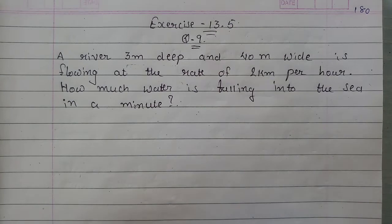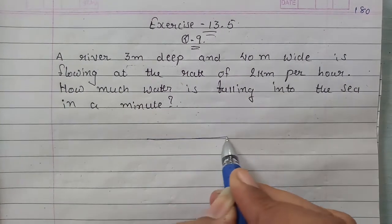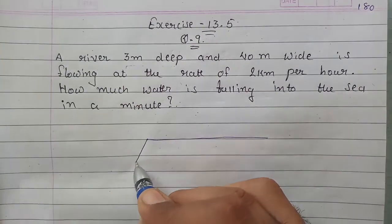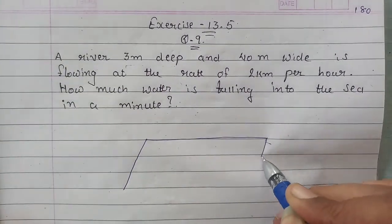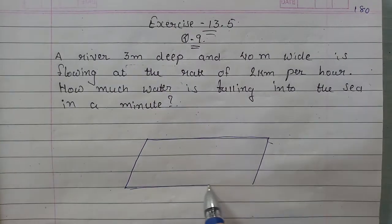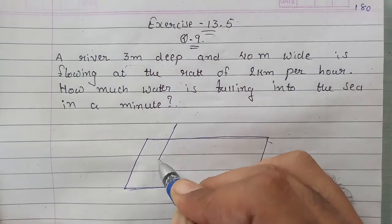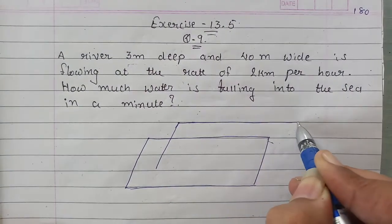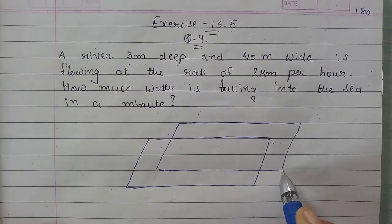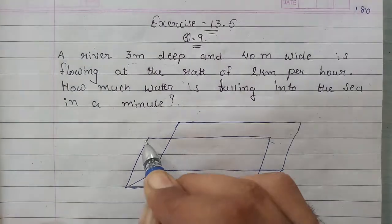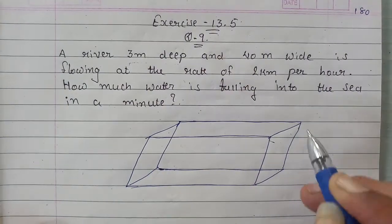First of all, we have a river whose shape is cuboid, that is already given. So let's have a river of cuboidal shape. Suppose this is the river that is flowing and the shape of this river is cuboidal. Now, the thing is that this river...